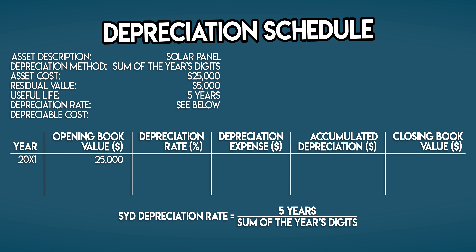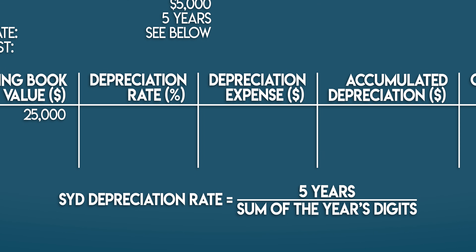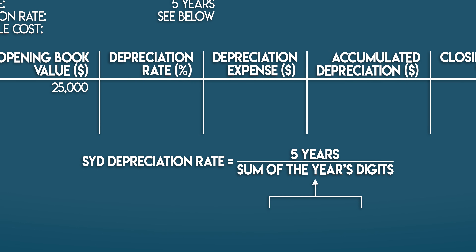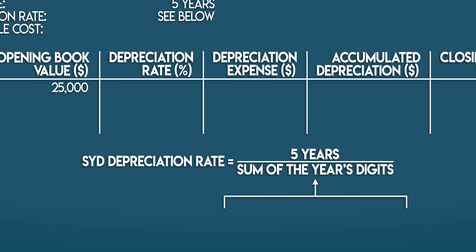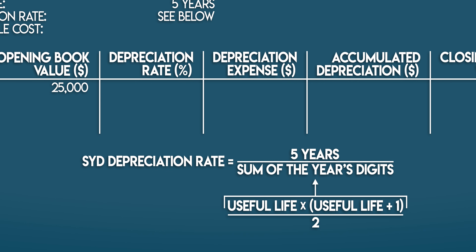There are two ways to calculate the sum of the year's digits and I'll show you both. The long way is more intuitive: just add up each year of your solar panel's five-year useful life — five plus four plus three plus two plus one, which equals 15. For the short way, mathematicians call this the sum of an arithmetic series, and the formula is: useful life multiplied by (useful life plus one), divided by two. So five times six divided by two gives us 15.